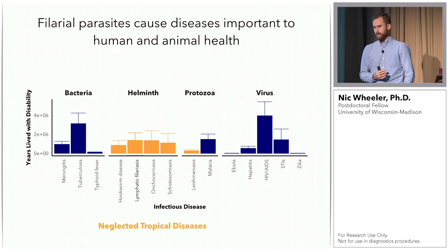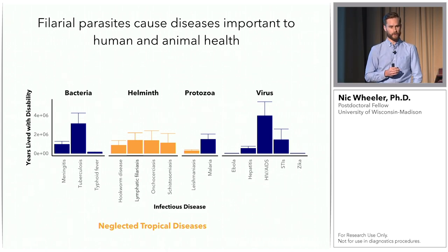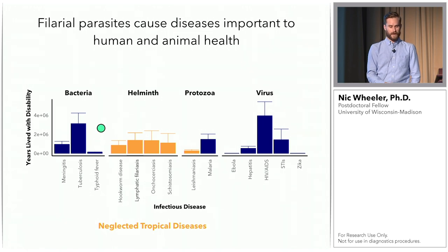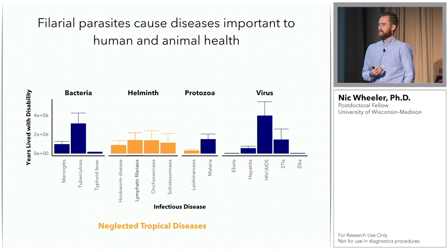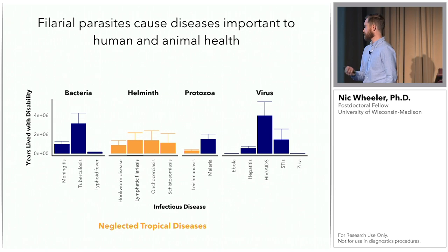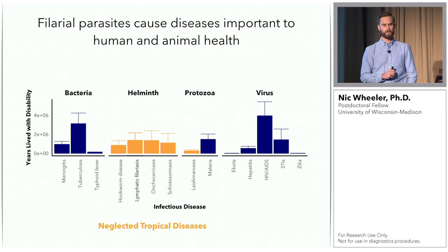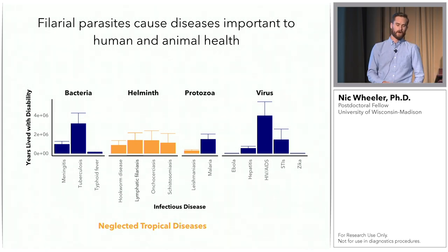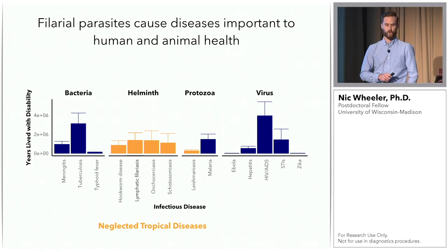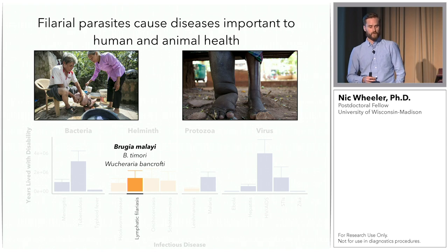Filarial parasites cause disease important to both human and animal health. This graph on the y-axis shows the years lived with disability due to disease annually for a number of different infectious diseases. Helminths are parasitic worms, and the disease we study is lymphatic filariasis. Helminth diseases cause debilitating disease similar to many more famous diseases like malaria, more than hepatitis or Ebola. Many people don't know about them because they infect the most poor people in the developing world, and they've been termed neglected tropical diseases by the World Health Organization.